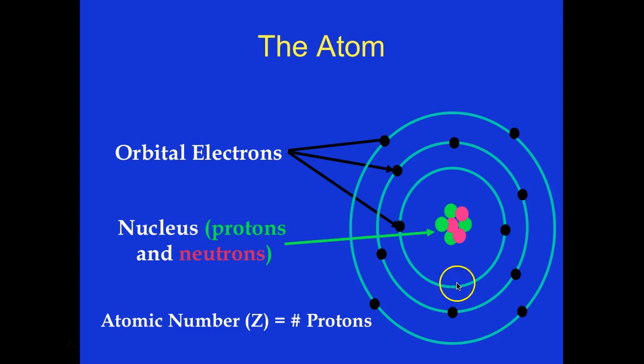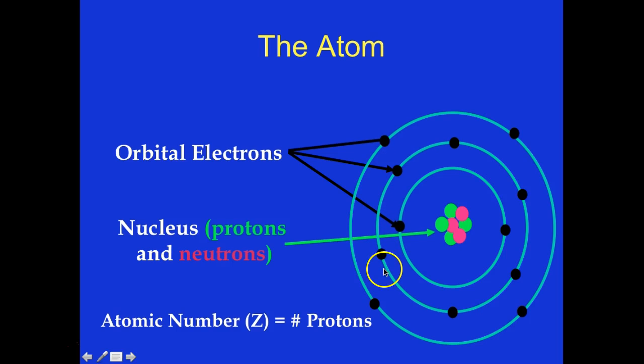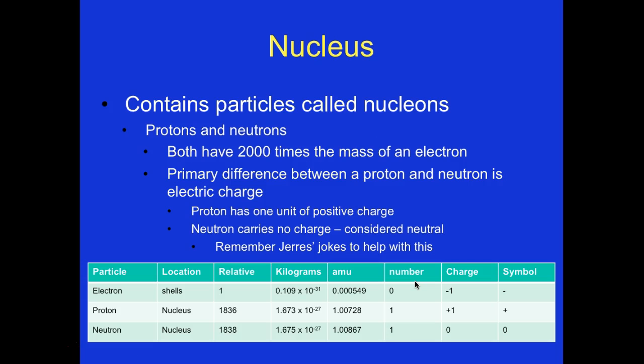The atom has orbiting electrons and a nucleus containing protons and neutrons. The atomic number Z is the number of protons that identifies the element. The nucleus contains particles called nucleons — protons and neutrons — both having 2,000 times the mass of an electron. The primary difference between a proton and a neutron is electric charge: the proton has one unit of positive charge, and the neutron carries no charge and is considered neutral.